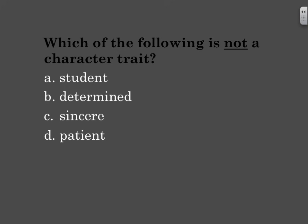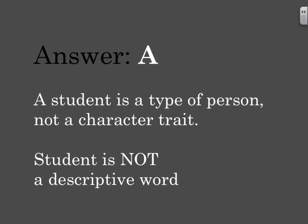Which of the following is not a character trait? A — student. B — determined. C — sincere. Or D — patient. The answer is A. A student is a type of person, not a character trait. Moreover, 'student' is not a descriptive word, so therefore it's not a character trait. All character traits have to be descriptive words.